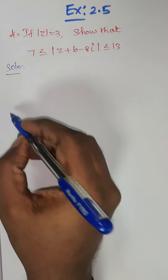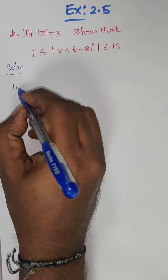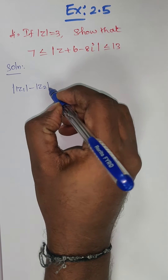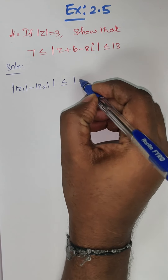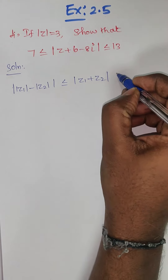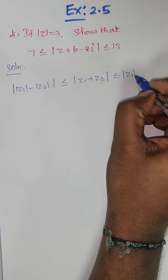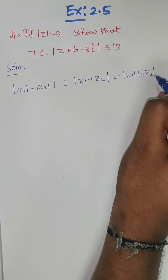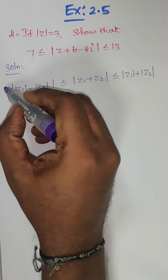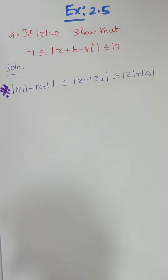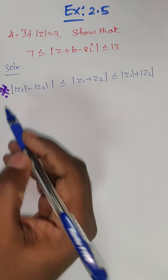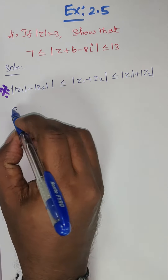The triangle inequality (Remoré property) states: mod of z1 minus mod of z2 is less than or equal to mod of z1 plus z2, which is less than or equal to mod of z1 plus mod of z2. This is the property we already discussed.